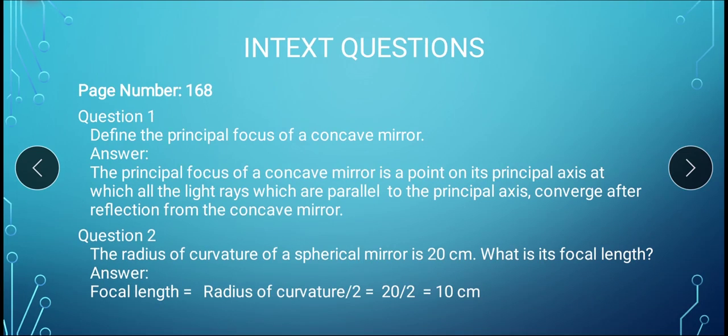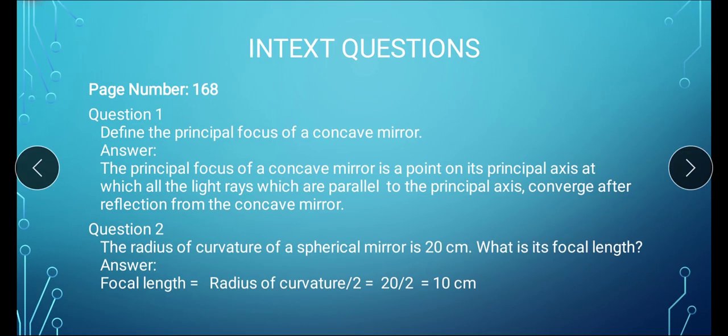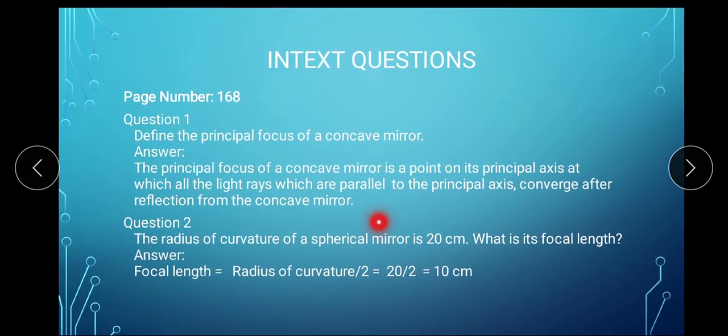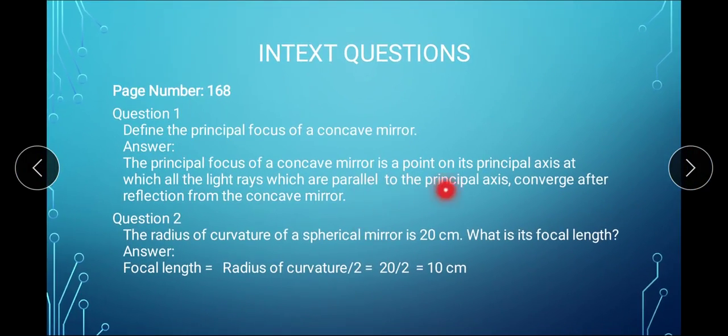Question number 1 says define the principal focus of a concave mirror. Principal focus of a concave mirror is a point on its principal axis at which all the light rays which are parallel to the principal axis converge after reflection from the mirror.